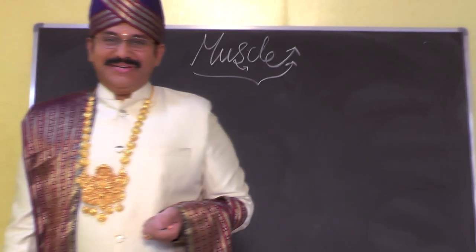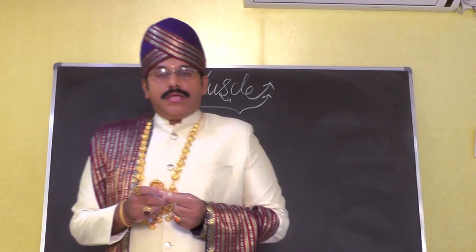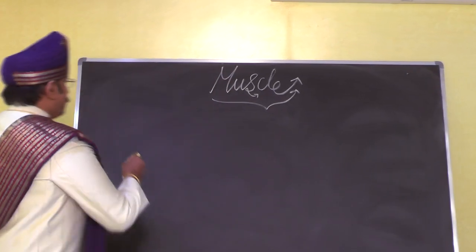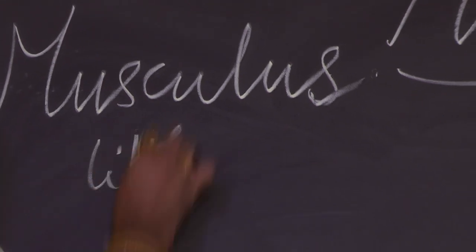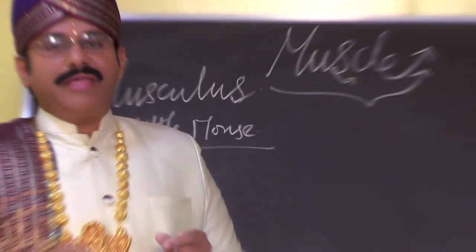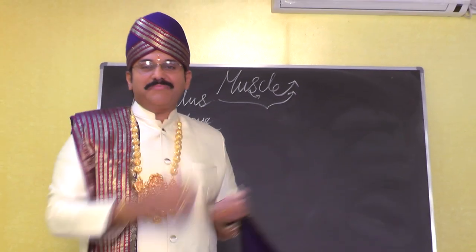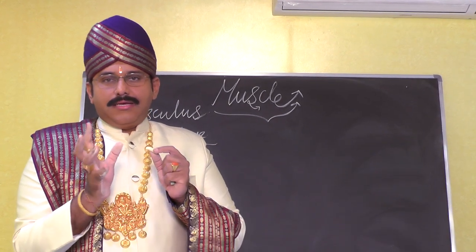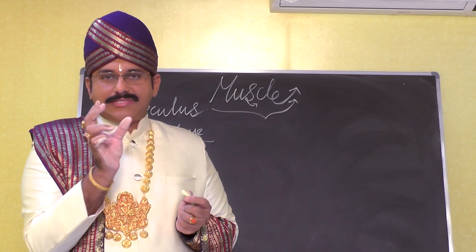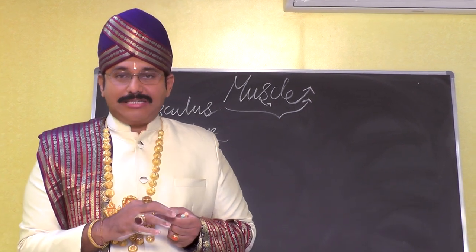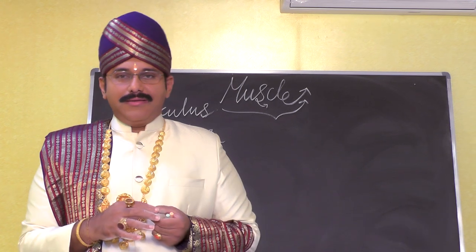Today we are going to learn about the muscle. The name 'muscle' is derived from the Latin word musculus, which means 'little mouse.' The fleshy belly of a muscle resembles the body of a mouse, and the tendon resembles its tail. Because of this fancied resemblance, it came to be called a muscle.